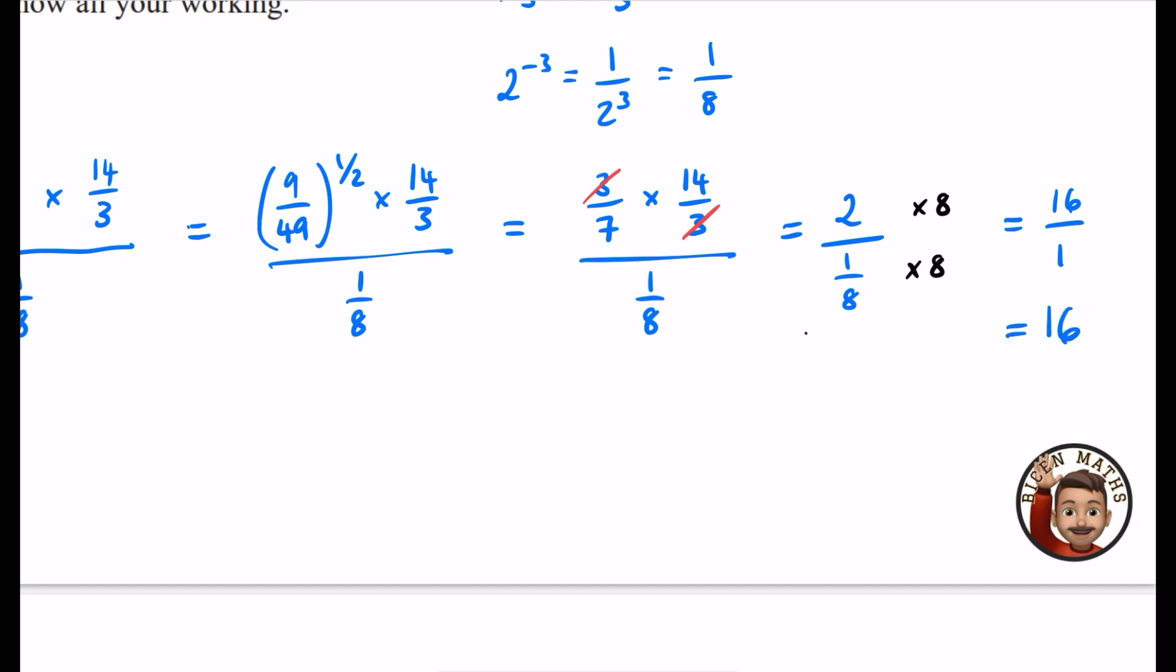However, at this stage, you could have done the alternative method, which is that we are doing 2 divided by an 8. And we know how to do that. We know that you keep the first one, you flip this over to an 8 over 1, and you change it to a multiply. And we still end up with that 16 over 1, which is just 16.